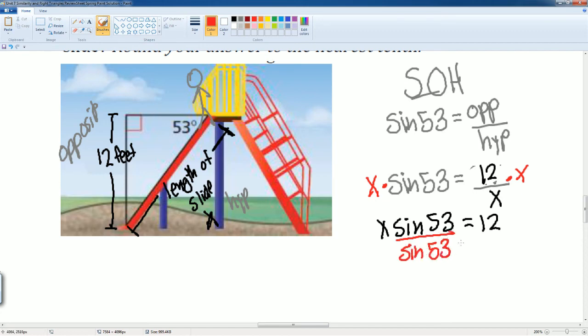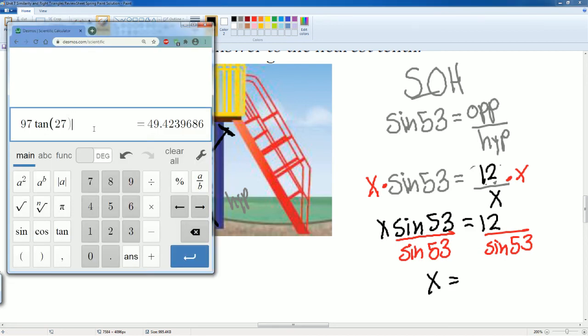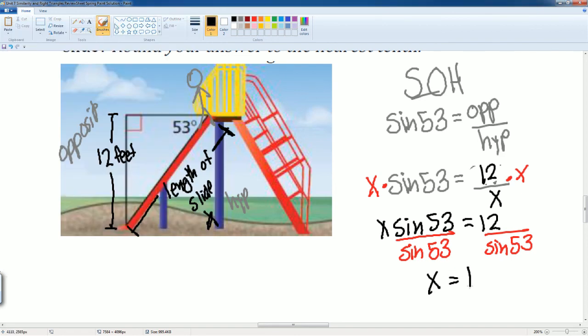...to both sides. That gets me X equals 12 divided by sine 53. I'm going to put that into a calculator: 12 divided by sine 53 gets me 15.02. Rounding that, that just gets me 15. That is the length of the slide: 15 feet.